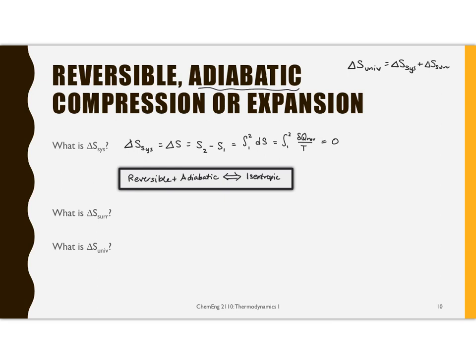The next question is: what's happening to the surroundings? The key thing to note here is that Q for our system is the opposite of Q for our surroundings. And in this case it's all zero. So if Q to the surroundings is also zero, then delta S for the surroundings is zero. Therefore, delta S for the universe is zero plus zero, or just zero.